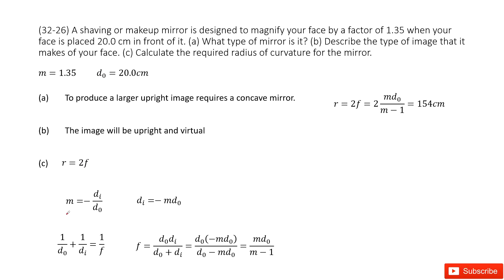The first equation is the definition of magnification: m equals negative di over do. From this we get di equals negative m times do.